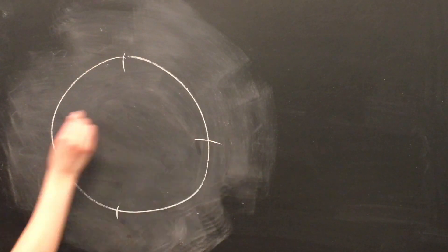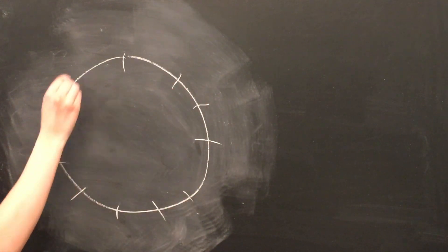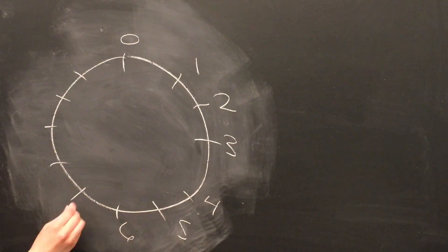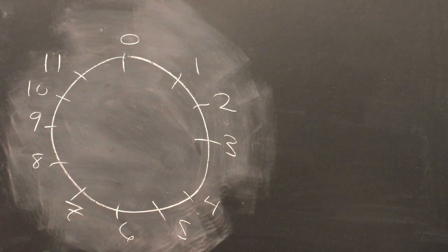But in fact, we can make this even more abstract by replacing the note letters once again with numbers. We'll start at C at 0, so C sharp is 1, D is 2, and so on, until we get to B, which is 11. These numbers are called pitch classes. We call this clock face the one-dimensional pitch class circle.